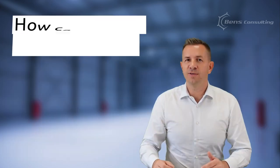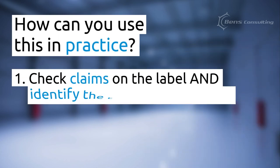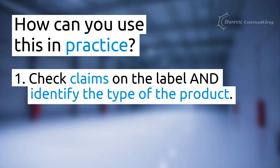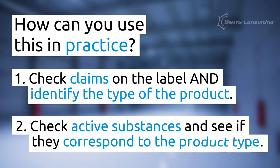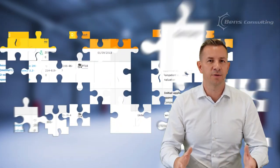How can you use this in practice? First, check claims on the label and identify and understand the type of the product. Second, check active substances and see if they correspond to the product type. If the claims are valid and the substances correspond to the claims, then the product is a valid biocidal product. Now all the pieces of the biocidal puzzle fit together. You know how to identify biocidal products, the intention of the product, and active substances.